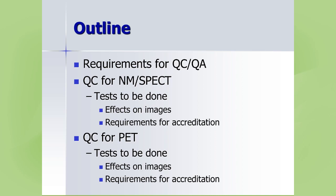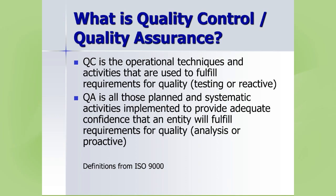Per ISO 9000, quality control and quality assurance are slightly different. Quality control is the operational techniques and activities used to fulfill requirements for quality — this is testing you do reactively when something may be causing an issue in your images. Quality assurance is a planned, systematic activity to provide adequate confidence that things are working properly — it's analytical and proactive, done before you notice a problem so it isn't impacting clinical work.